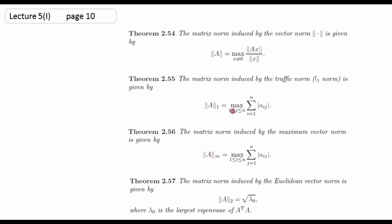Euclidean (matrix) norm کے لیے: matrix A کا transpose لینا ہے، پھر AᵀA کا product لینا ہے، اس resultant matrix کی eigen values find کرنی ہیں، اور ان تمام eigen values میں سے جو greatest eigen value ہوگی اس کا square root لیں — وہ Euclidean matrix norm ہوگی۔